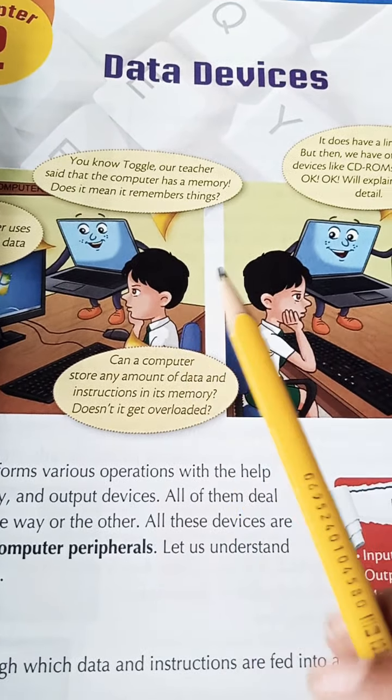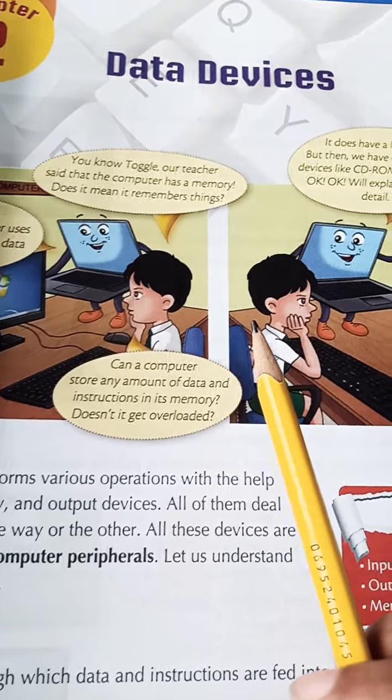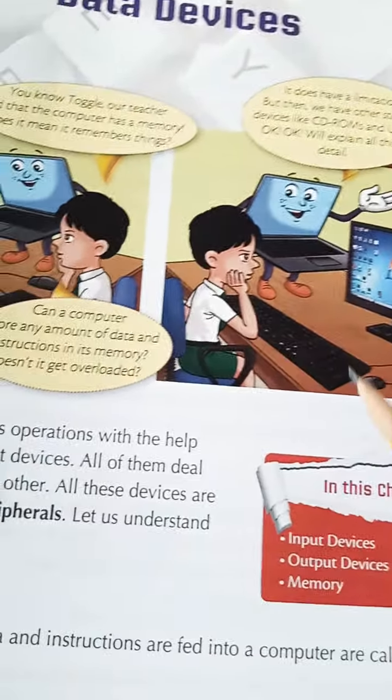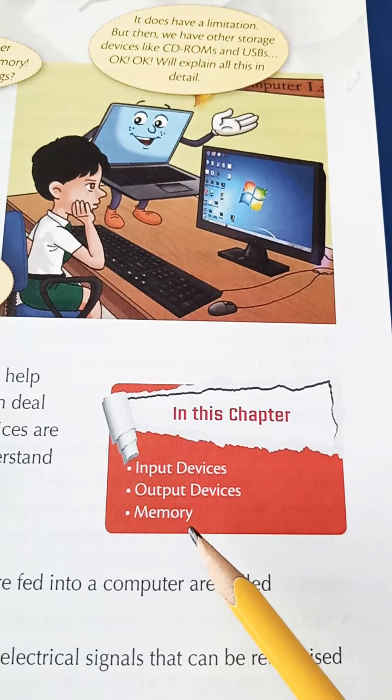Aaj hum kya batayenge hume beta? Ki data ki devices kya kya hain? Data hume kaha kaha store kar sakte hain? Computer mein, CD-ROM mein, USB mein. To aaj hume detail pardenge. In this chapter: input devices, output devices and memory.